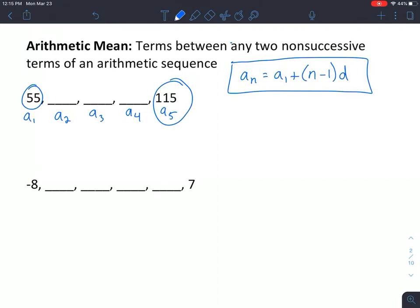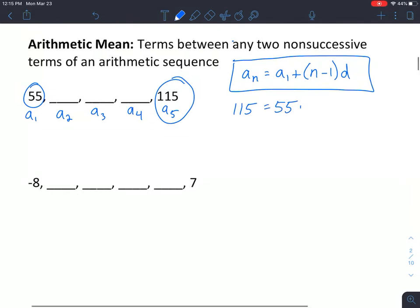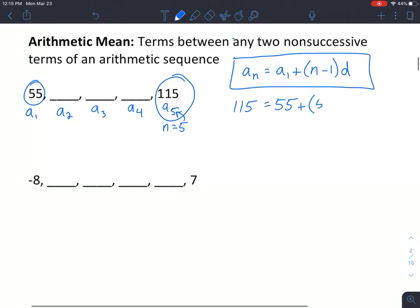So instead of saying a sub n, we're going to say a sub 5, which is 115, equals a sub 1, which is 55, plus, in this case, n equals 5 because of that number right here. Now d, we don't exactly know yet. We know we can find it out based on the patterns. However, that's basically all we have left, and so now we can use algebra to figure this out.